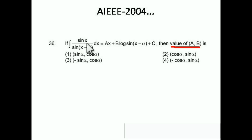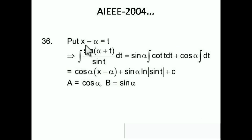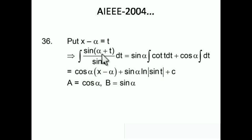Let's substitute x − α = t, so dx = dt. Then x = α + t, and sin(x) = sin(α + t) = sin α·cos t + cos α·sin t. Dividing by sin t: we get sin α·cot t + cos α. So the integral becomes sin α·∫cot t dt + cos α·∫1 dt.